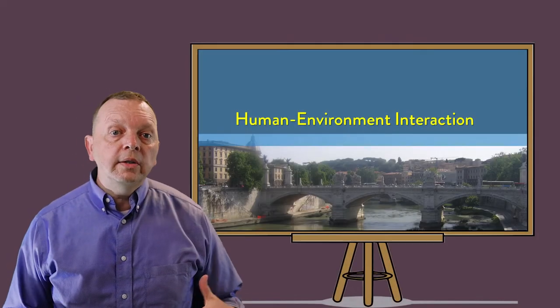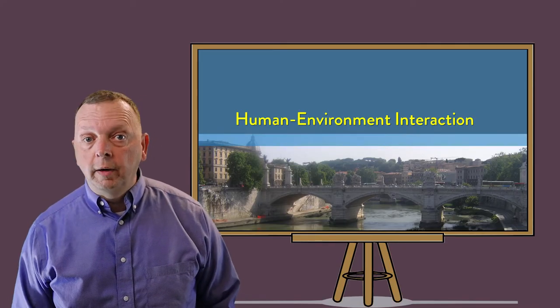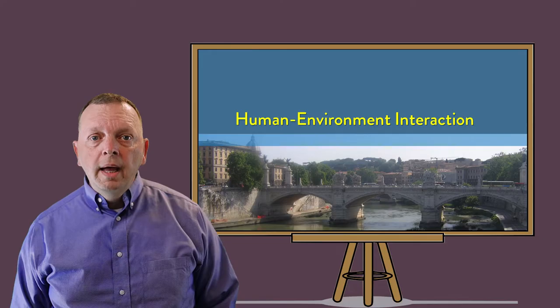By now we should be able to describe the significant landforms of Europe — we talked about those in our last lesson — and we've just talked about its climate. So now let's look at some of the ways that mankind is interacting with its environment in Europe.